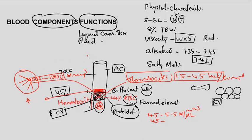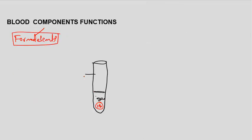So component number one is the formed elements, which make up 45% of blood. The remaining 55% is blood plasma. So blood is composed of formed elements and plasma.